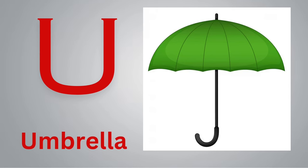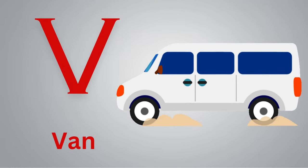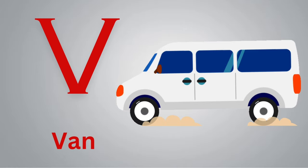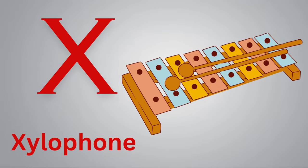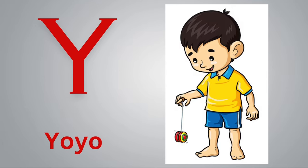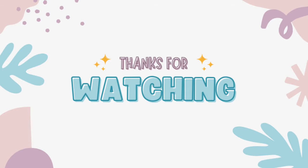U for umbrella. V for van. W for watch. X for xylophone. Y for yo-yo. Z for zebra. Thanks for watching!